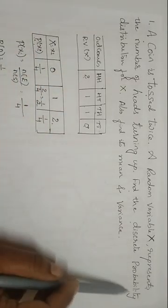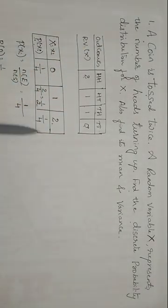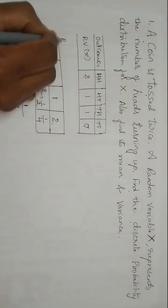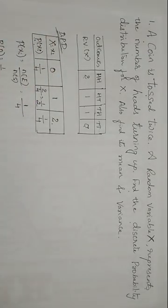Our table is ready. This is the discrete probability distribution. How the random variable X is being distributed. So this is the probability, discrete probability distribution.